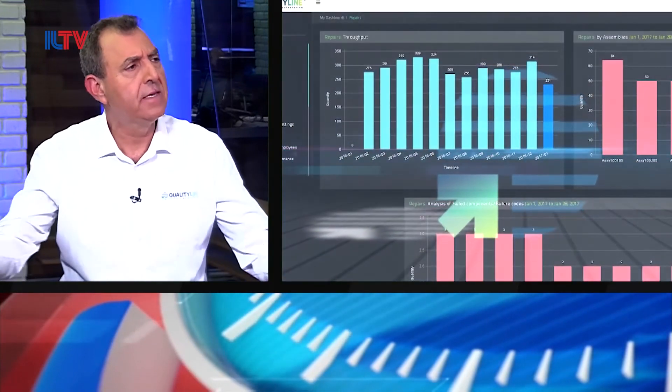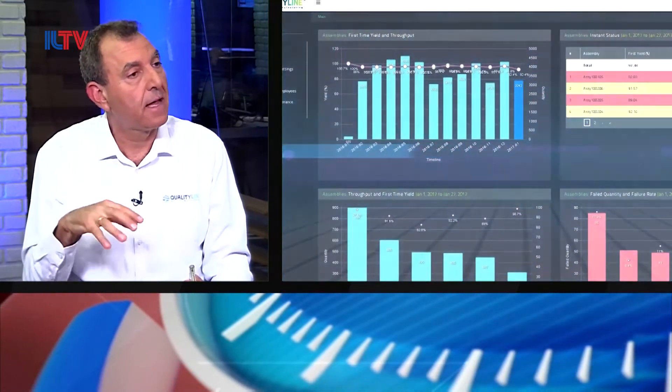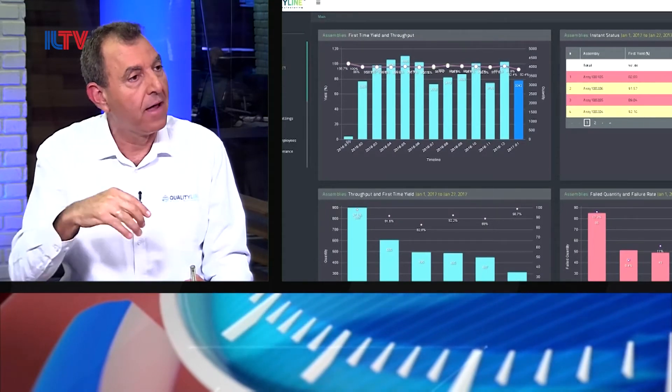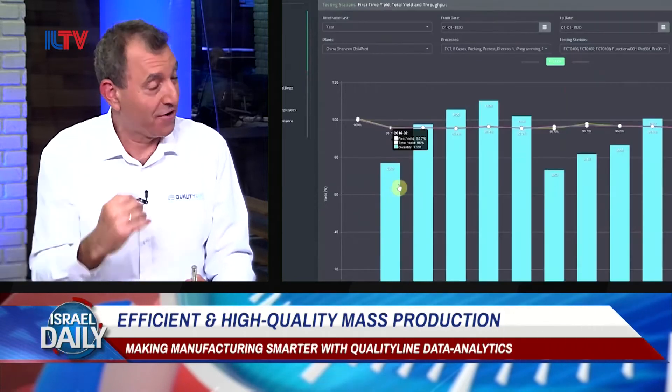And that's where QualityLine comes in with this new technology. We collect automatically the data that is being accumulated during the manufacturing process — machine data, sensor data, automated test equipment. We take this huge amount of big data and automatically analyze it using our algorithms to automatically identify problems in quality and efficiency in manufacturing.